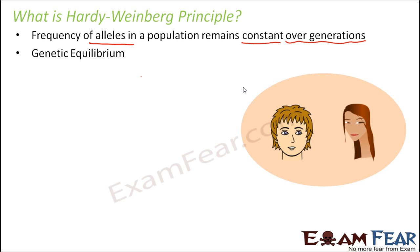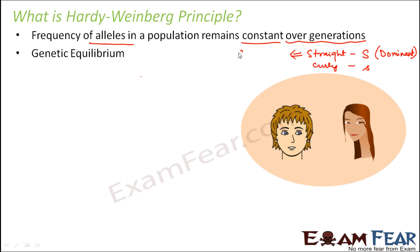We are considering a particular trait, and that is the type of hair. Hair type can be straight or curly. For straight hair, the allele is going to be capital S, and for curly hair we denote it by small s. We also say that straight hair is a dominant trait over curly hair. So somebody who has got straight hair, their genotype can be capital S capital S or capital S small s, whereas somebody who has curly hair will have genotype small s small s.